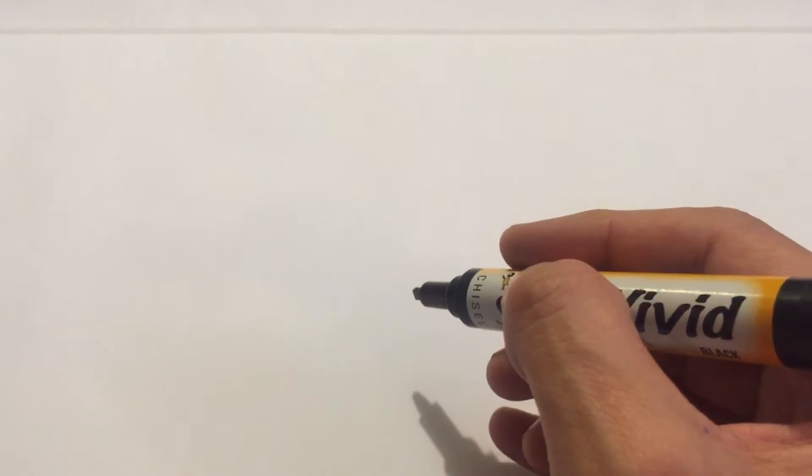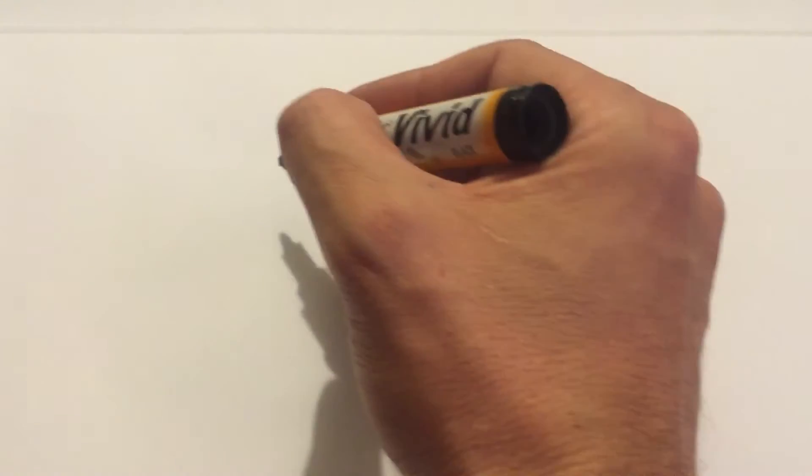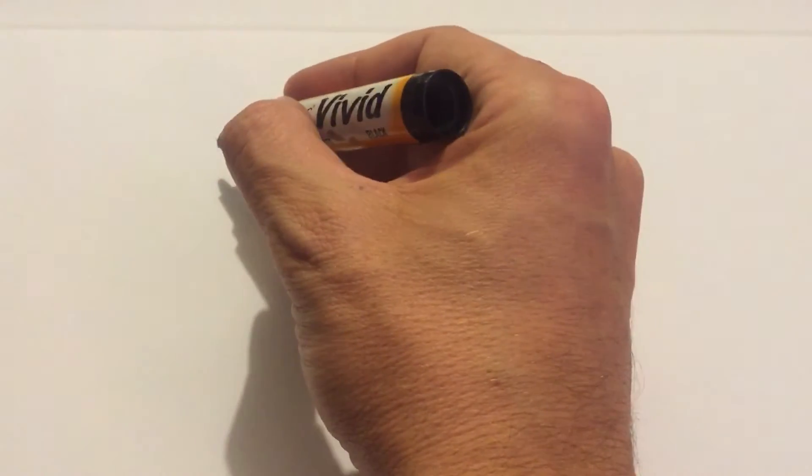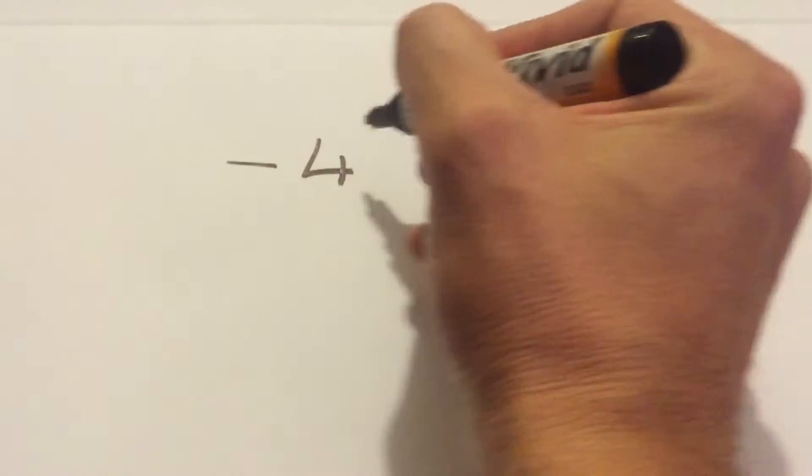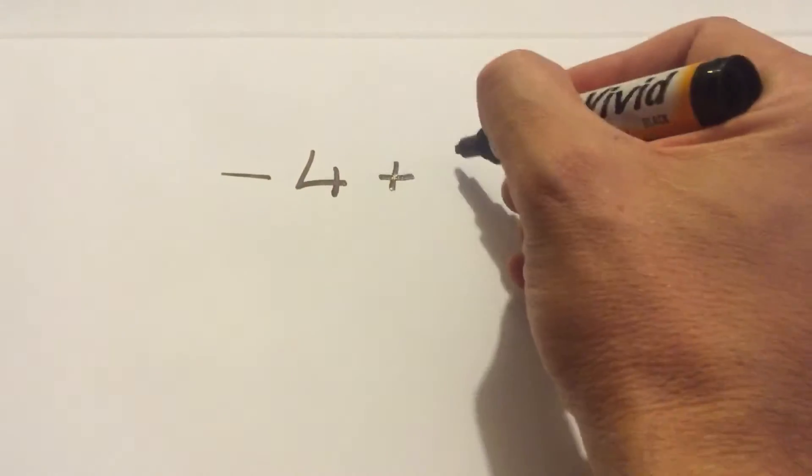Welcome to another edition of Maths Made Easy NZ. Today we're going to look at negative numbers and adding them. So adding negative numbers, just do a pretty simple equation, negative 4 plus 6.